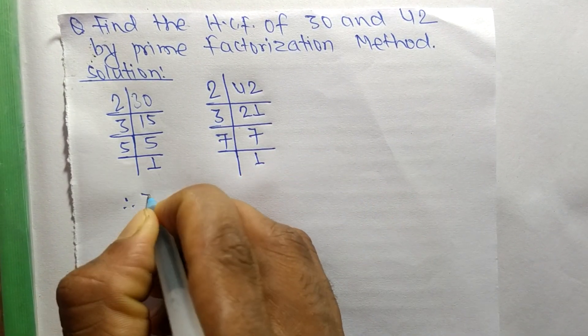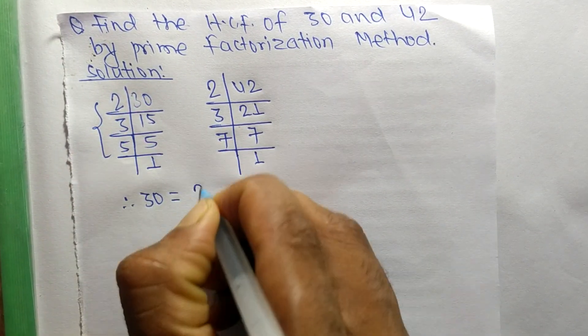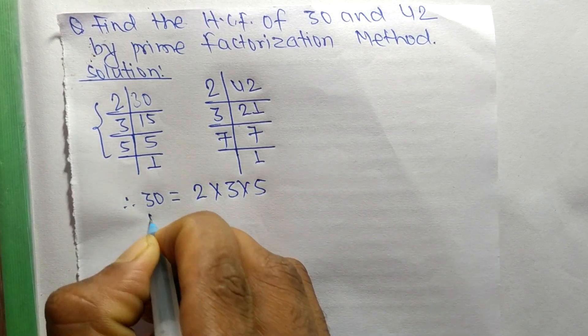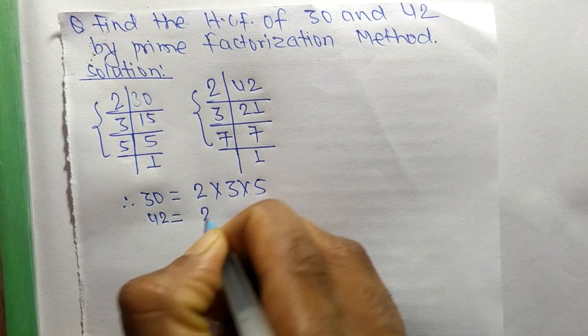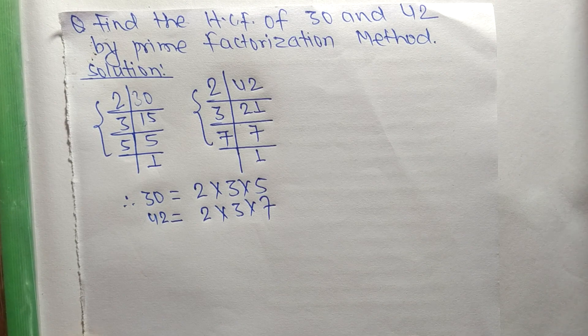we can write 30 is equal to 2 times 3 times 5. Like this, 42 is equal to 2 times 3 times 7. So now we have to...